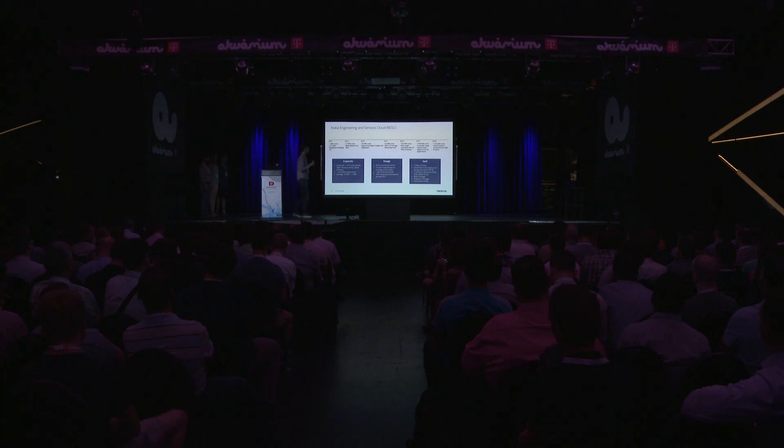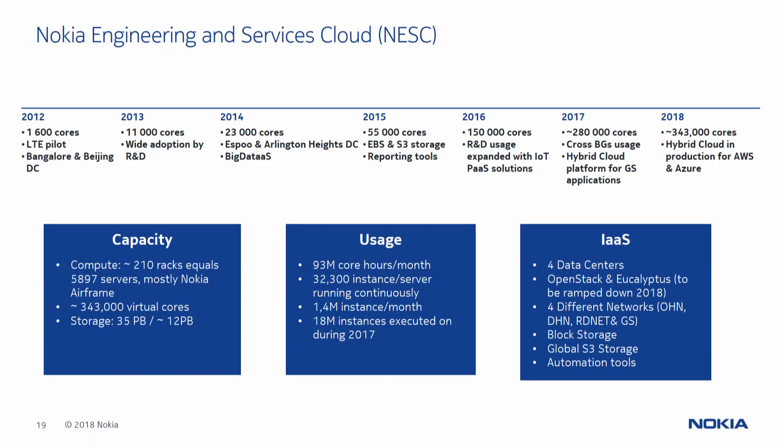About the data centers — we have four data centers serving this cloud. The biggest one is in Espoo, Finland. We also have data centers in Bangalore, India; Hangzhou, China; and a small one in Franklin Park, USA. Most capacity is in the Espoo lab but the others are increasing too. We still have some Eucalyptus from the past, but the plan is to ramp those down in the very near future. The new thing is that we are now trying hybrid cloud — Nokia is able to offer Amazon or Azure usage, of course in a very secure way compliant to Nokia policies.